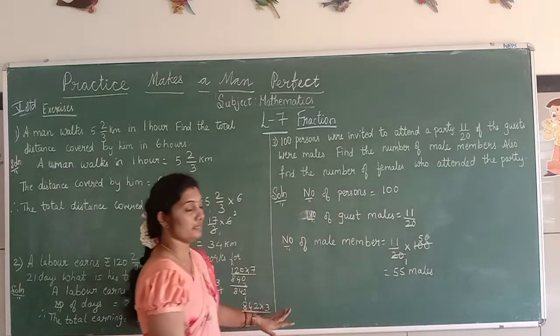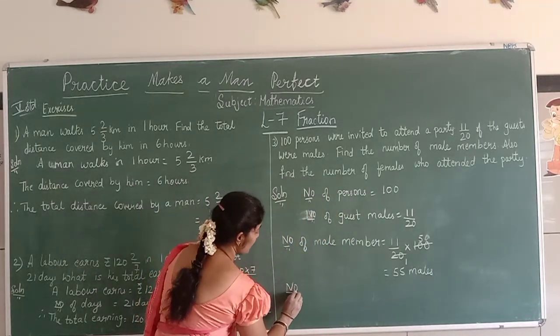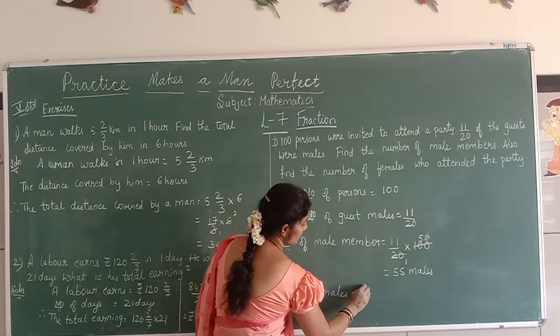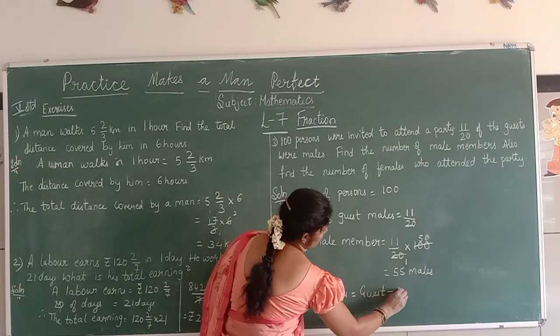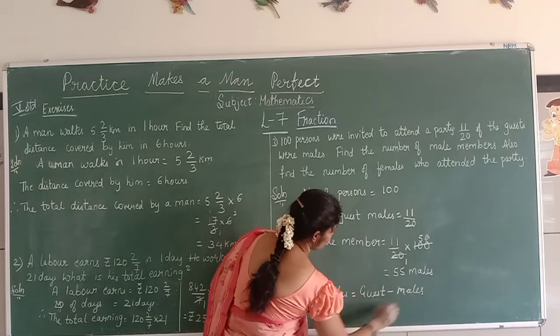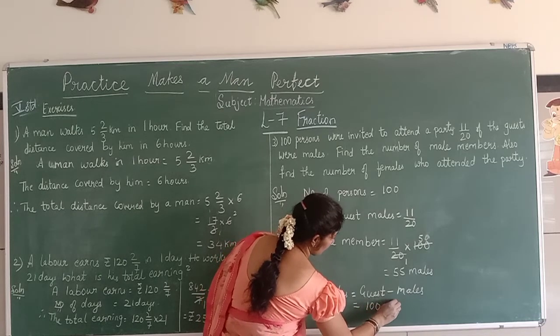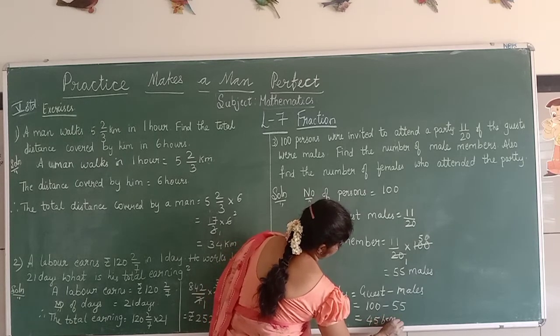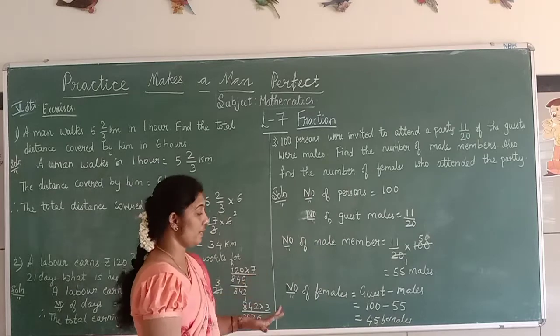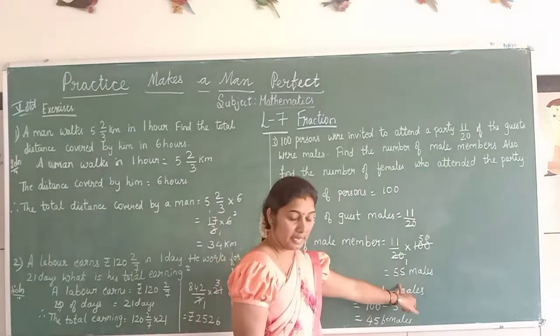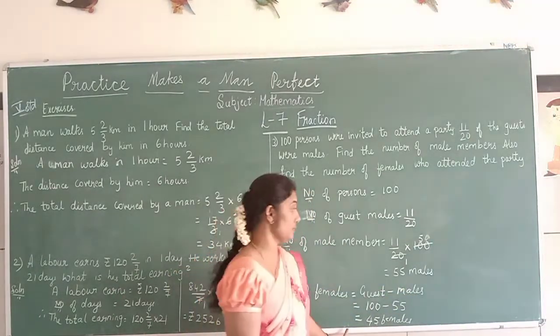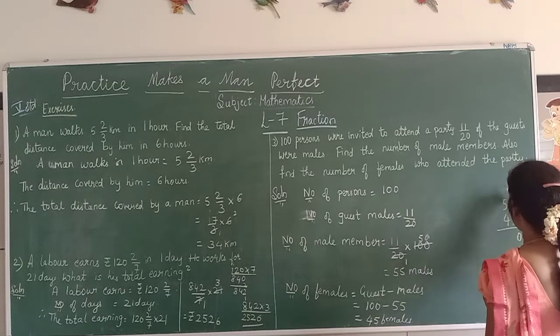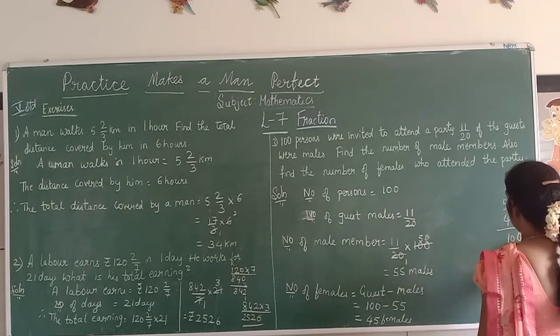Number of male members equals total guests minus female maids. So 100 minus 55 equals 45 male members. Out of 100, 55 are female maids and 45 are male members. When you add 55 plus 45, you get 100 people at the party.